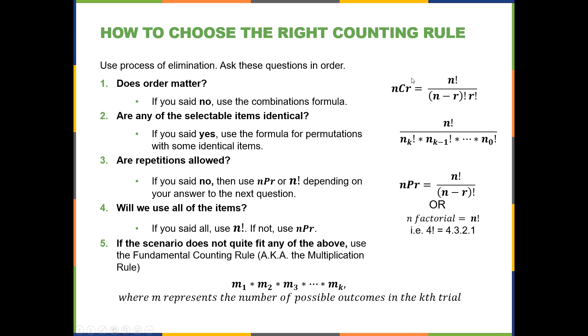And really, these counting rules, although we think of them in this order by asking these questions to do process of elimination, it actually builds from the bottom up. We start with the fundamental counting rule, and then as we add conditions like, oh, you're using all without replacement, or you're using some without replacement, or some items are identical, or order doesn't matter, then we keep going to different versions. They're alternate versions of the original.